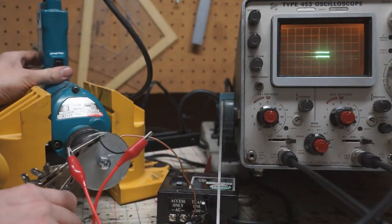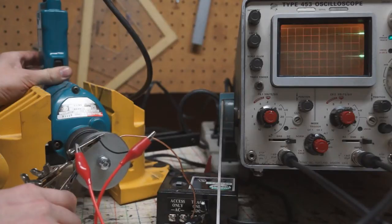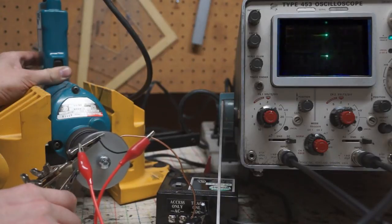If I reverse the direction of the drill, the reverse is true. The top trace now leads the bottom trace because it is rotationally 90 degrees ahead. This gives you a way to determine both the speed and the direction of rotation of an encoder.